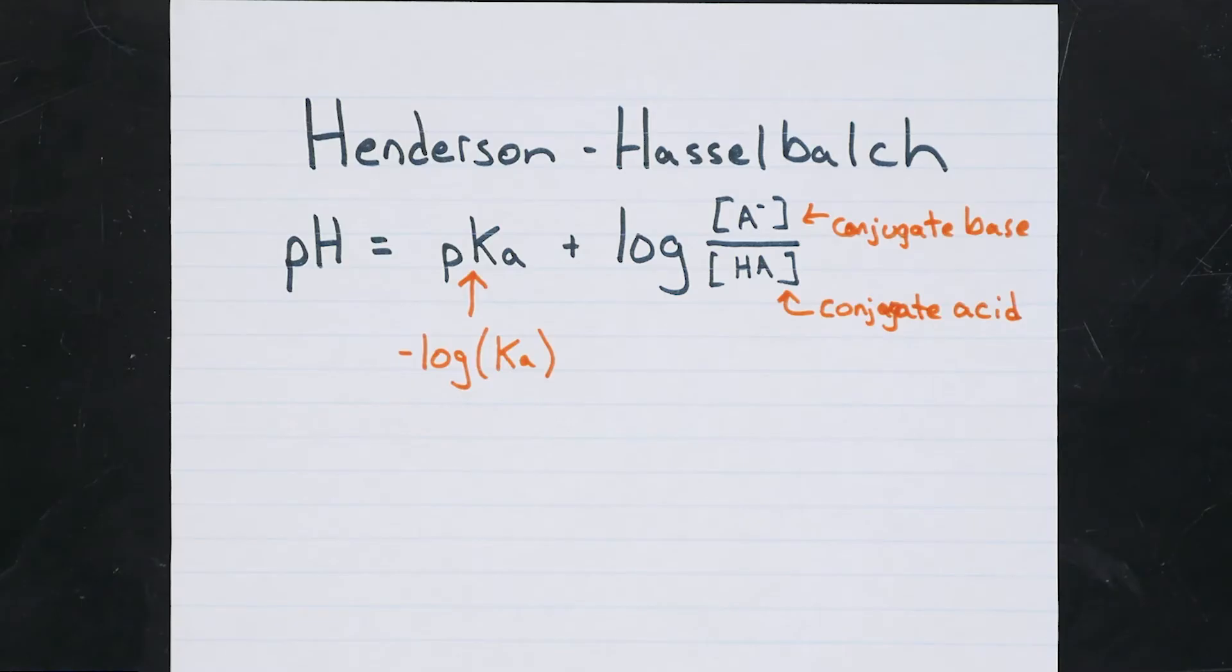Now that you know the actual pH of each buffer, try calculating the pH they should be to see how close you are. First, calculate the number of moles of the acid and base pair in each buffer solution, and then use the appropriate Ka value to determine the expected pH. Do your calculations agree with your experimental observations?